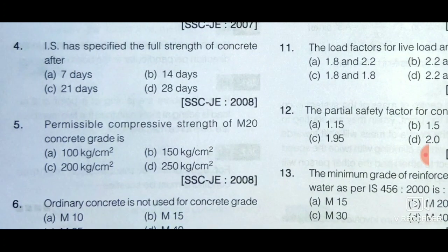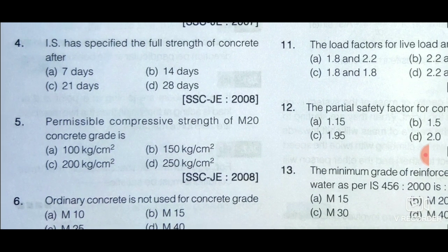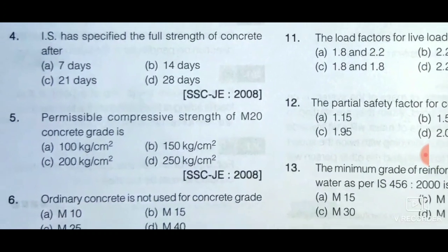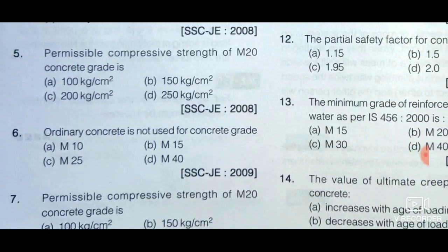Next question: IS has specified the full strength of concrete after 28 days — option D is the correct answer. Next question: Permissible compressive strength of M20 concrete grade is — option A: 100 kg/cm², option B: 150 kg/cm², option C: 200 kg/cm², and option D: 250 kg/cm². In M20 grade concrete, M indicates mix and 20 indicates compressive strength in N/mm². The permissible compressive strength is 200 kg/cm², so option C is the correct answer.